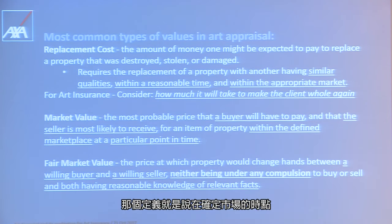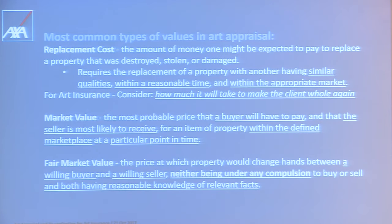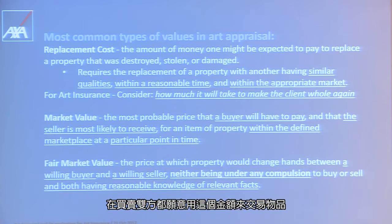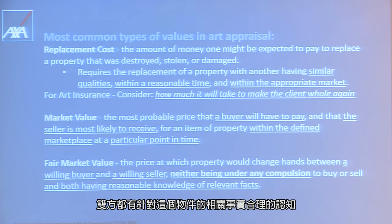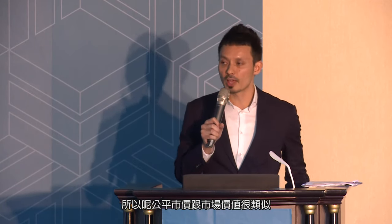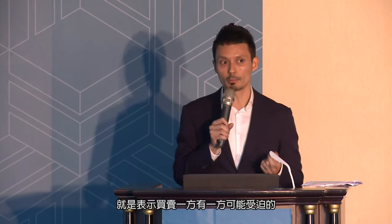The second type of value is market value, which is the most probable price that a buyer will have to pay and the seller is most likely to receive for property within the defined marketplace at a particular point in time. The last one is fair market value, which is the price at which property would change hands between a willing buyer and a willing seller, neither being under any compulsion to buy or sell, and both having reasonable knowledge of relevant facts. Fair market value and market value are actually quite similar, but two main differences are: fair market value is a hypothetical situation, because in reality buyers and sellers almost always have some compulsion. For market value, there could be a compulsion to buy or sell.